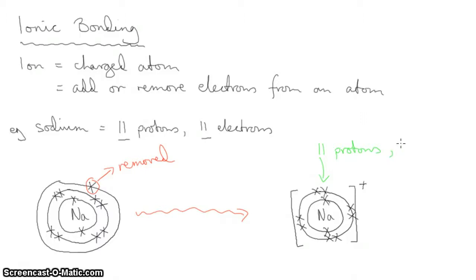But it only has now 10 electrons. So 11 protons equals 11 positive charges in the nucleus. 10 electrons equals 10 negative charges outside the nucleus.